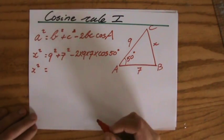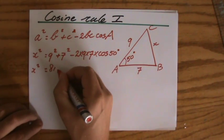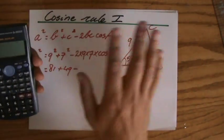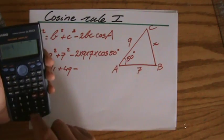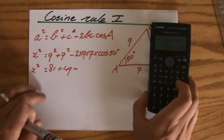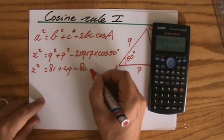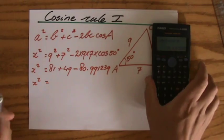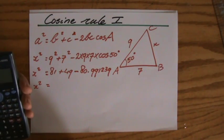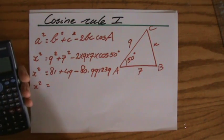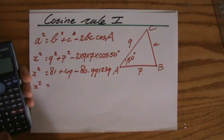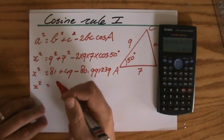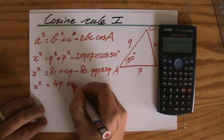And then we just have to plug into our calculator, or work it out ourselves. 9 squared is 81, plus 49, and minus — I'm going to put that in my calculator — 2 times 9 times 7 times the cosine of 50, which equals 80.991239. So x squared equals 81 plus 49 minus 80.991239, which gives me 49.008761.